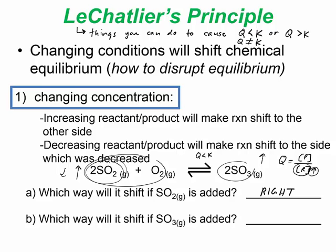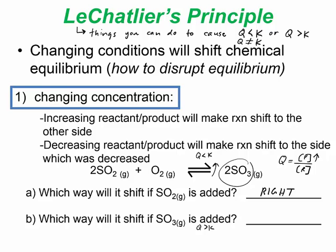The next question: which way will it shift if SO3 is added? If SO3 is added, the product side becomes too high, making Q greater than K. To reestablish K, the reaction needs to go to the left, so O2 and SO2 concentrations will increase and SO3 will decrease. So it would shift to the left.